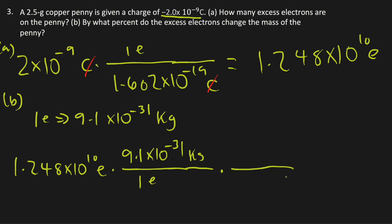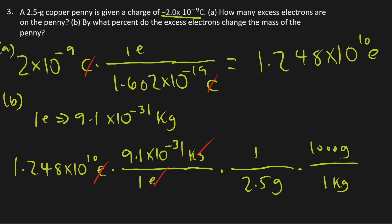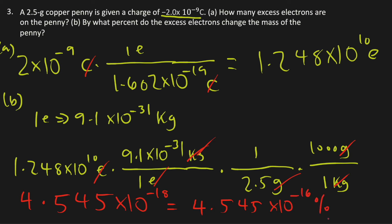Divide by the mass of the penny: multiply by the reciprocal of 2.5 grams and convert grams to kilograms. The units cancel out. The result is 4.545 times 10 to the negative 16th power percent. This is the answer for Problem 3.